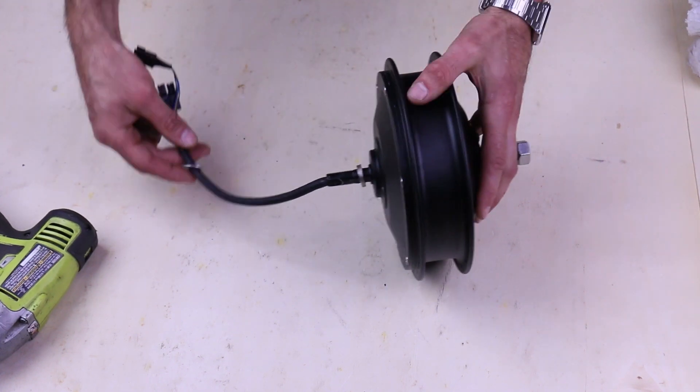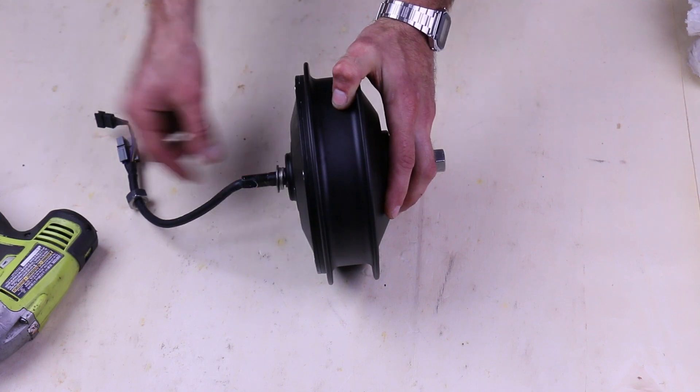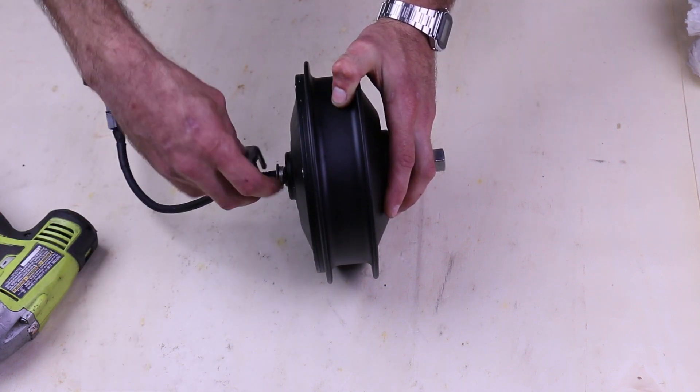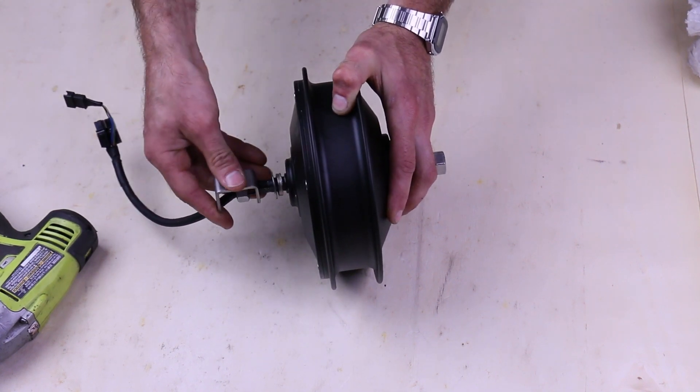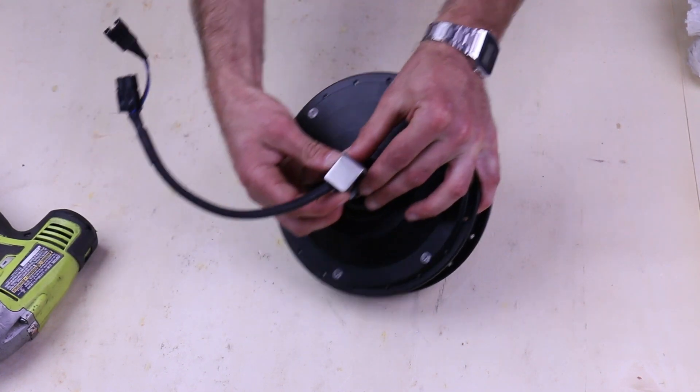Once that's all back together, don't forget to reinstall the wire protection system that's present on these eZee motors. This way, if the bike falls over, or you get into a crash, you're not going to damage the wire that exits the axle here.